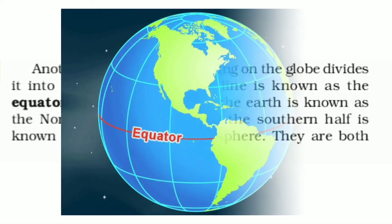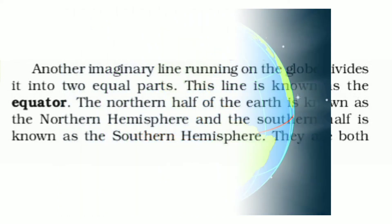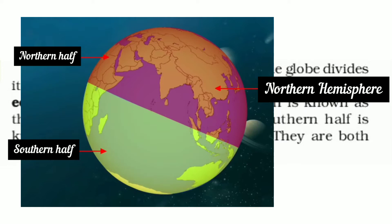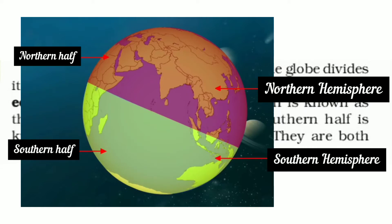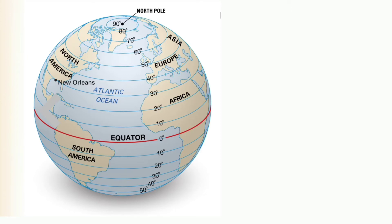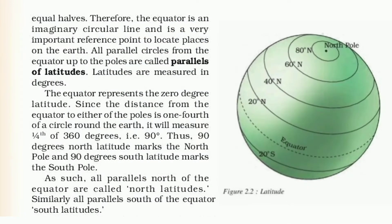Another imaginary line running on the globe divides it into two equal parts, and this line is known as the equator. The northern half of the Earth is known as the Northern Hemisphere, and the southern half is known as the Southern Hemisphere. The equator is an imaginary circular line and it is a very important reference point to locate places on the Earth. All parallel circles from the equator up to the poles are called parallels of latitudes, and they are measured in degrees.